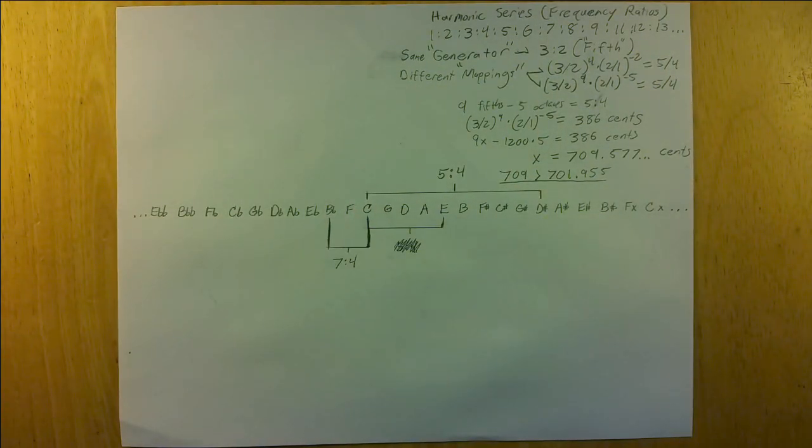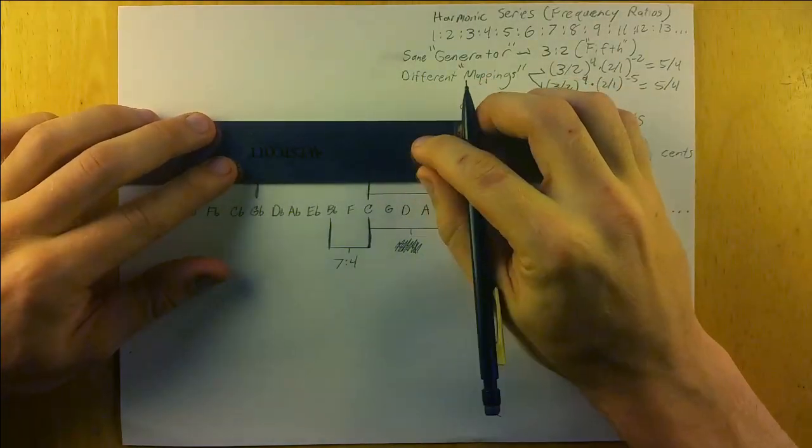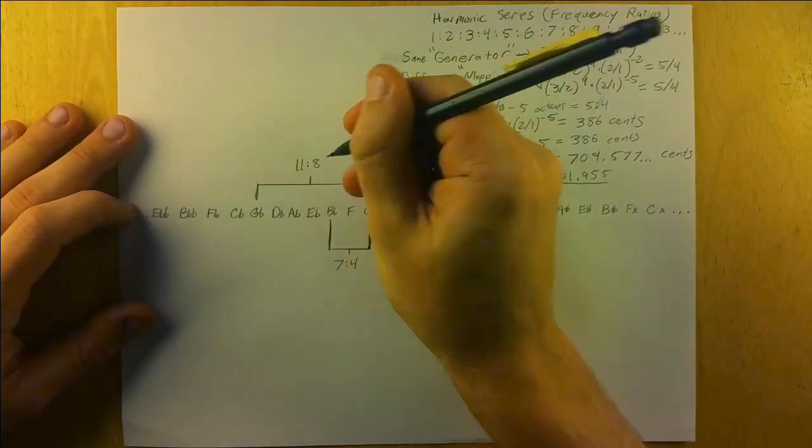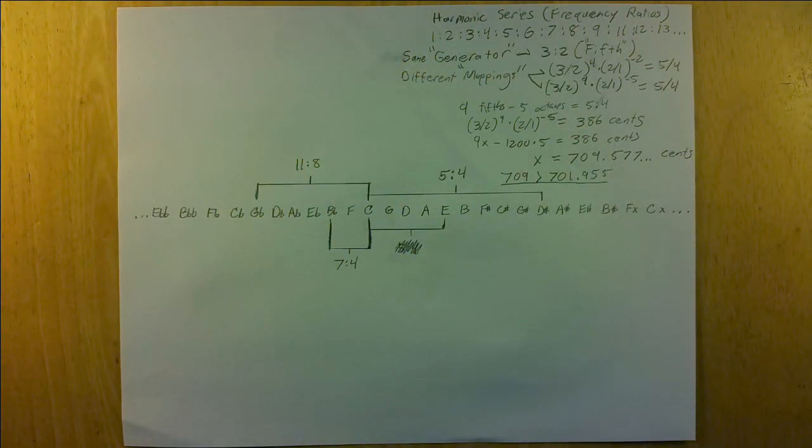And where the mean tone temperament I described mapped eleven to eight to the doubly augmented third, an eleven limit Super-Pythagorean temperament accurately maps eleven to eight to the diminished fifth. These seven and eleven limit mappings are actually simpler than the mean tone ones, so less chromaticism is required to access them, as demonstrated by this short example.